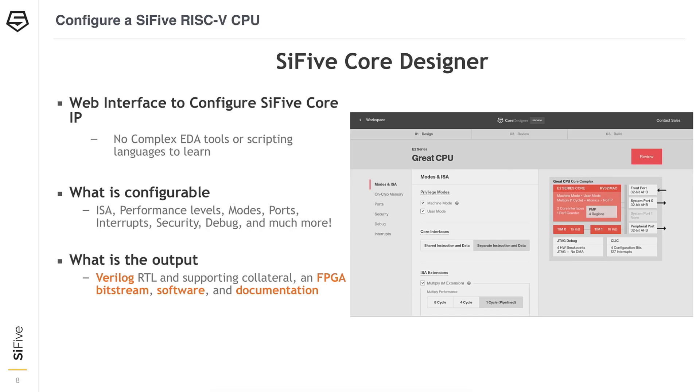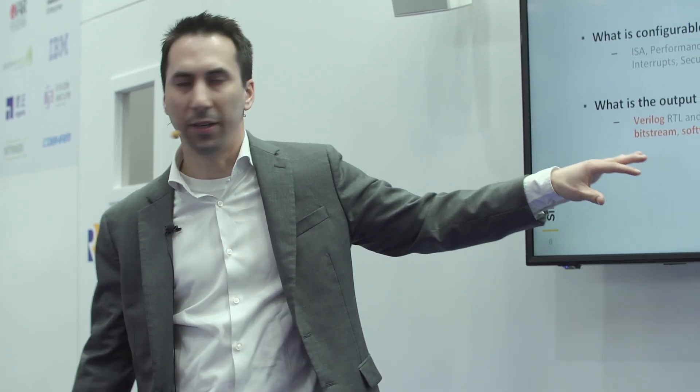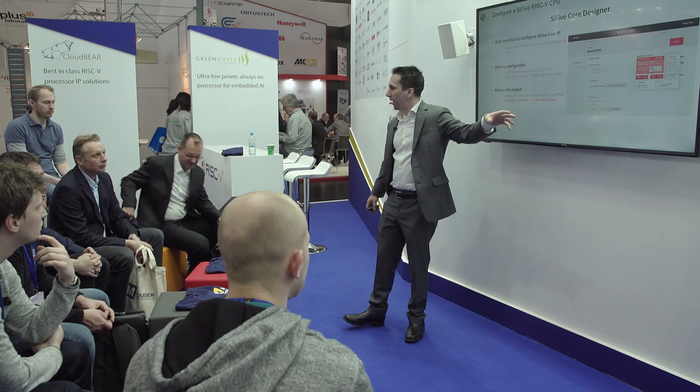What's configurable? First, the ISA — in RISC-V the architecture is very modular, so you can pick which standard extensions to include. Performance levels: depending on the series, you can configure branch prediction, Harvard vs. von Neumann architectures, level 2 caches, and more. Privilege modes, ports, memory maps, debugging, security, and number of regions are all configurable fields in Core Designer. The output includes the design in Verilog, an FPGA bitstream, documentation, and more.